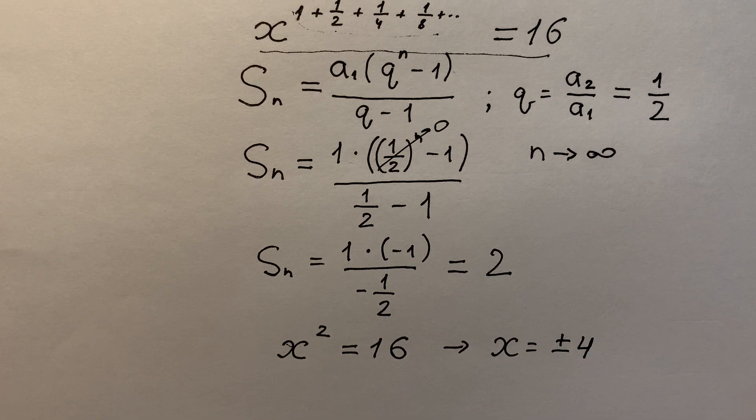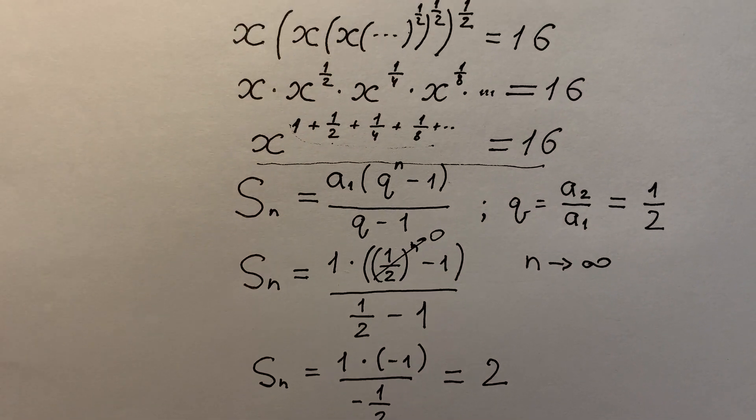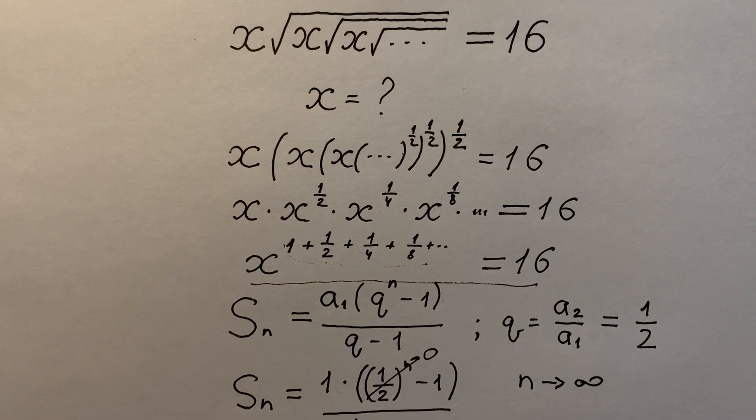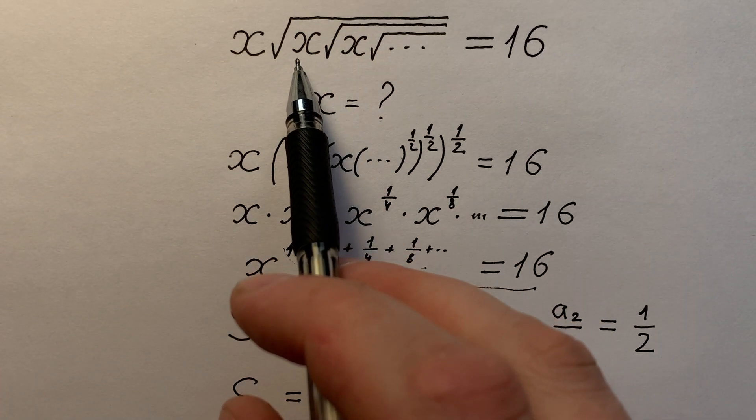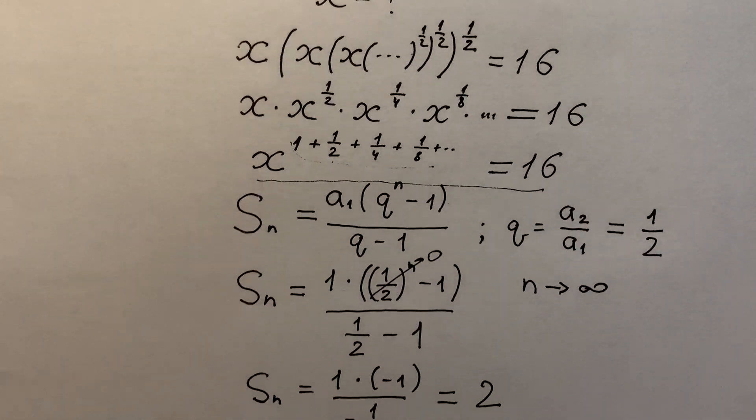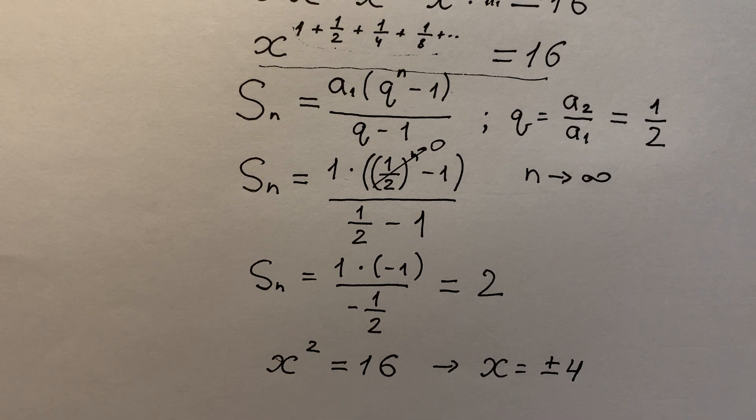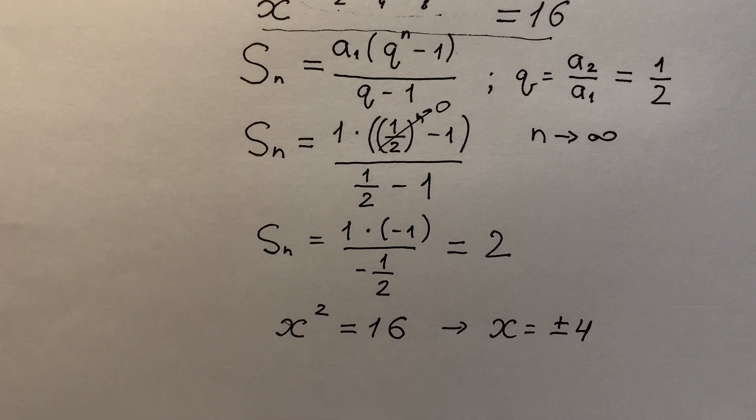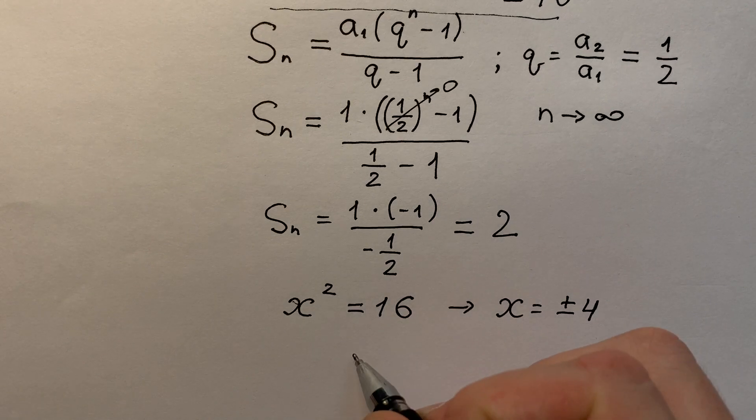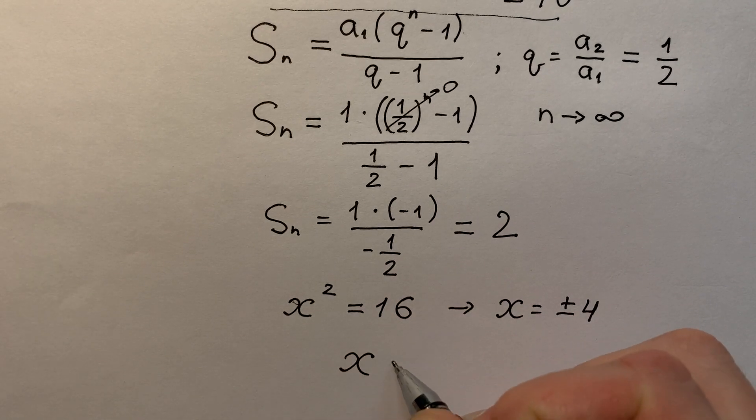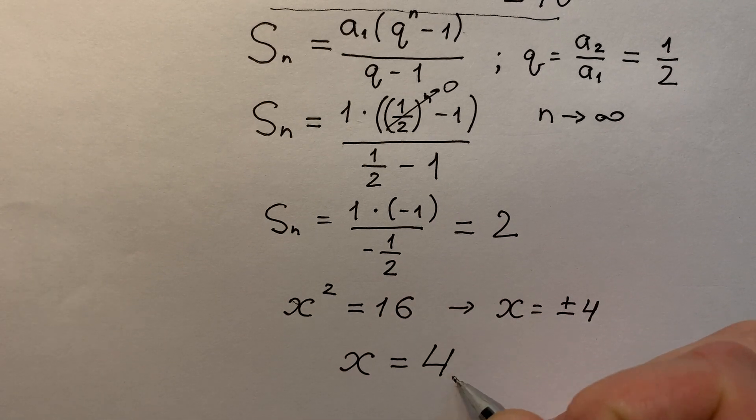But minus 4 is not our solution. Because look at the beginning, we know that x is more or equals to 0, but minus 4 is less than 0. So one and the only one solution of our equation is x equals to 4.